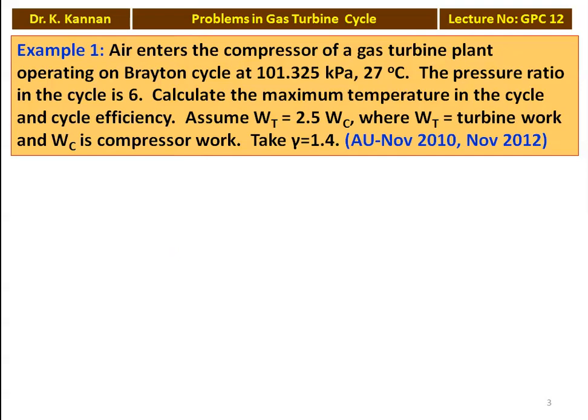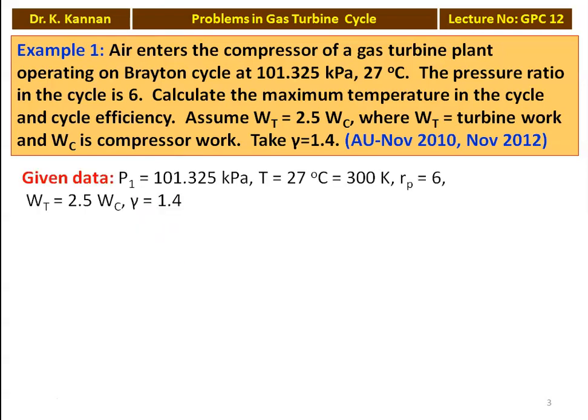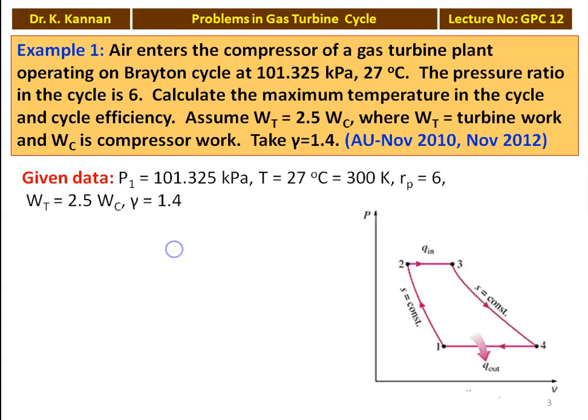The first example is from the November 2010 and November 2012 question paper. Air enters the compressor of a gas turbine plant operating on Brayton cycle at 101.325 kPa and 27°C. The pressure ratio in the cycle is 6. Calculate the maximum temperature in the cycle and cycle efficiency. Assume Wt = 2.5 times Wc, where Wt is the turbine work, Wc is the compressor work, and gamma = 1.4 for air. Given data: P1 = 101.325 kPa, T1 = 27°C = 300 K, Rp = 6, Wt = 2.5 Wc, gamma = 1.4. This is the P-V diagram for the simple Brayton cycle.